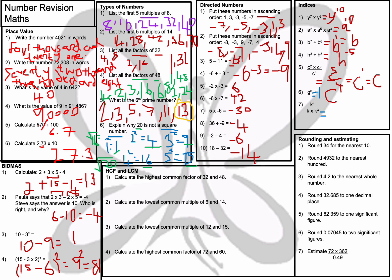Question number 7: k⁴ ÷ (k × k³). Let's work out the denominator first. k times k³: there's an invisible power of 1, so 1 plus 3 equals 4, giving k⁴. So it's k⁴ divided by k⁴. Anything divided by itself is 1, and k to the power of 4 minus 4 is k⁰, which is always equal to 1.